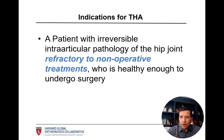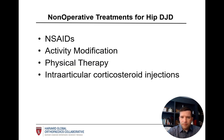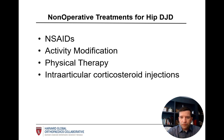Surgery is generally not our first treatment option when considering these various pathologies of the hip joint. Most patients will undergo a period of non-operative treatments. These treatments can include anti-inflammatory medications, activity modification to avoid those activities which cause hip pain to worsen, and physical therapy, which can occasionally be helpful. Sometimes we can provide intra-articular corticosteroid injections, often using ultrasound or x-ray image guidance to ensure accurate placement. These can all provide temporary relief, but many of these patients prove refractory to these treatments and therefore become candidates for total hip replacement.